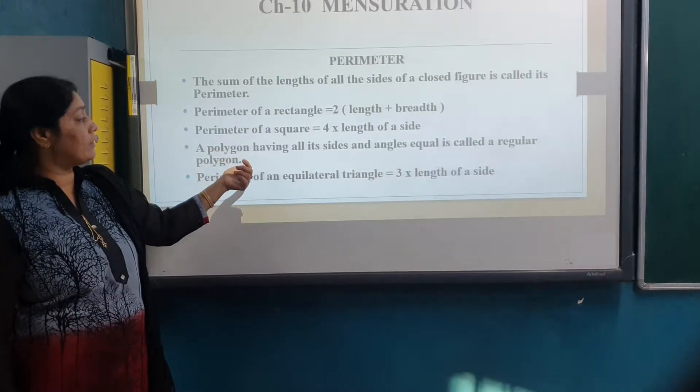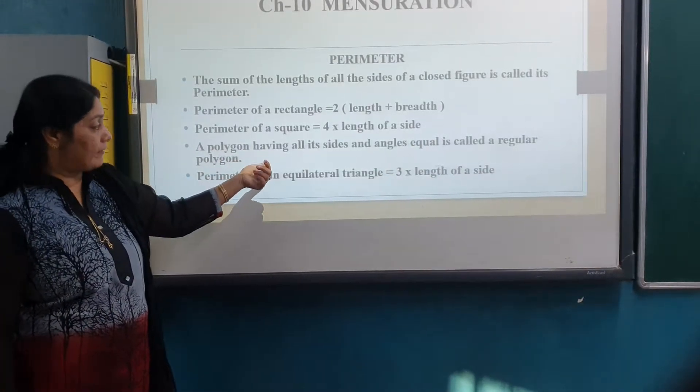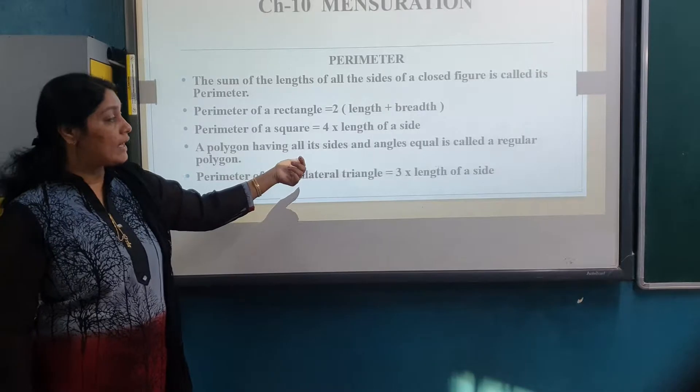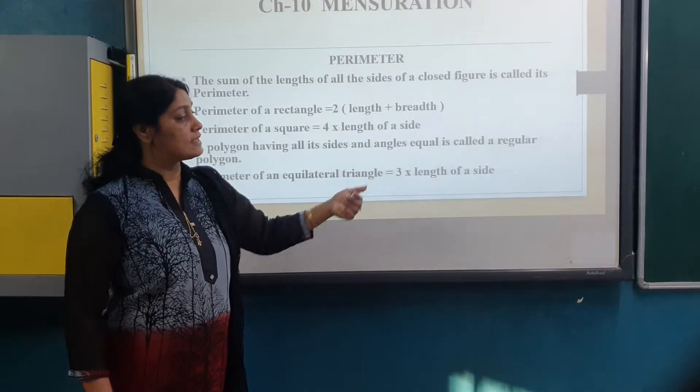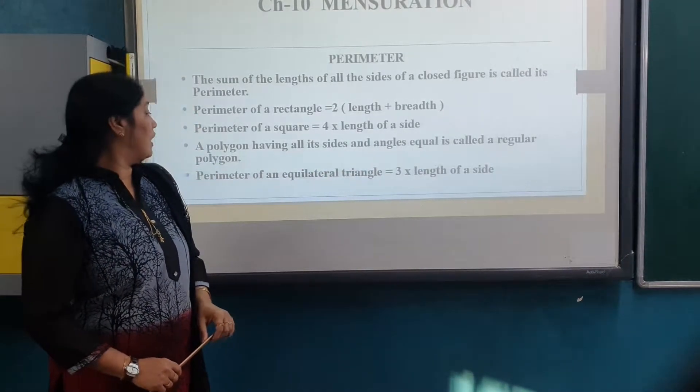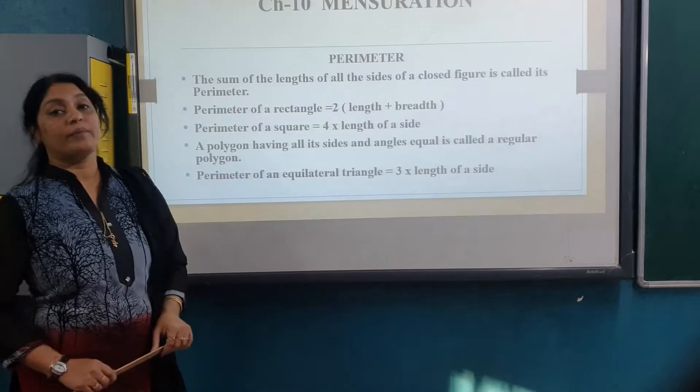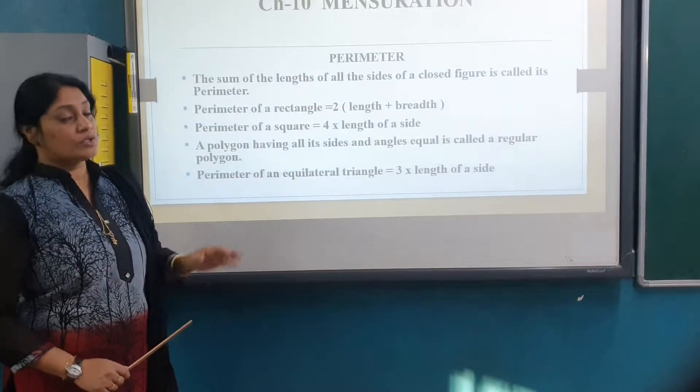A polygon having all its sides and angles equal is called a regular polygon.